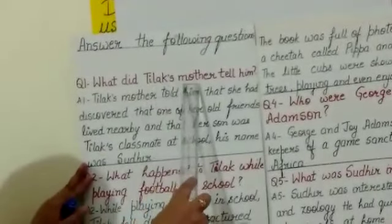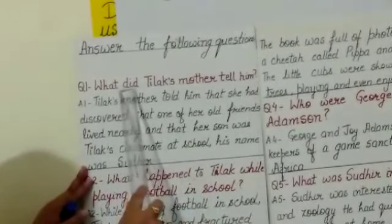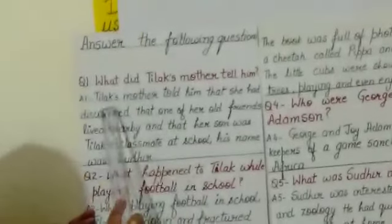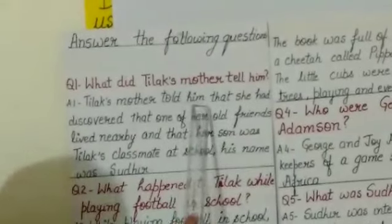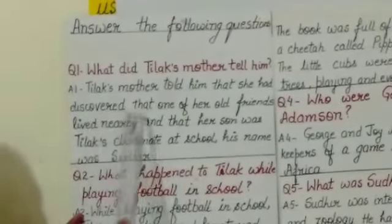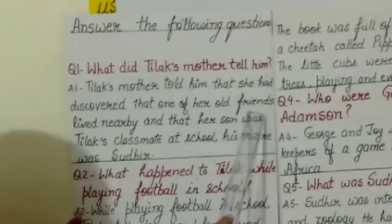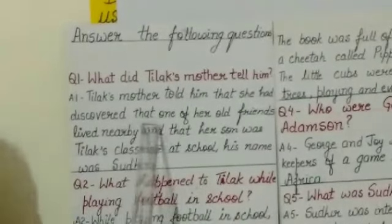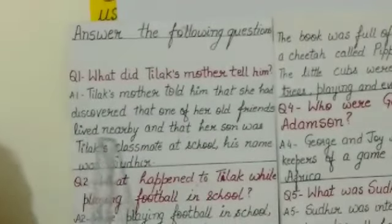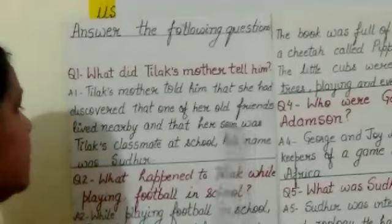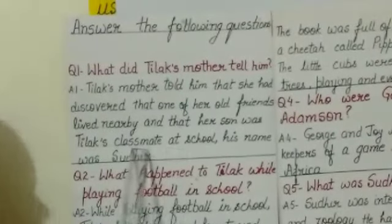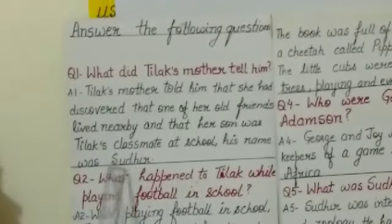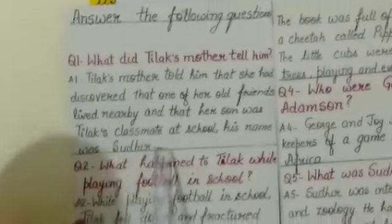Question 1: What did Tilak's mother tell him? Answer 1: Tilak's mother told him that she had discovered that one of her old friends lived nearby, and that her son was Tilak's classmate at school. His name was Sudhir. Because Sudhir is a proper noun, you will write S with a capital. This finishes your answer.